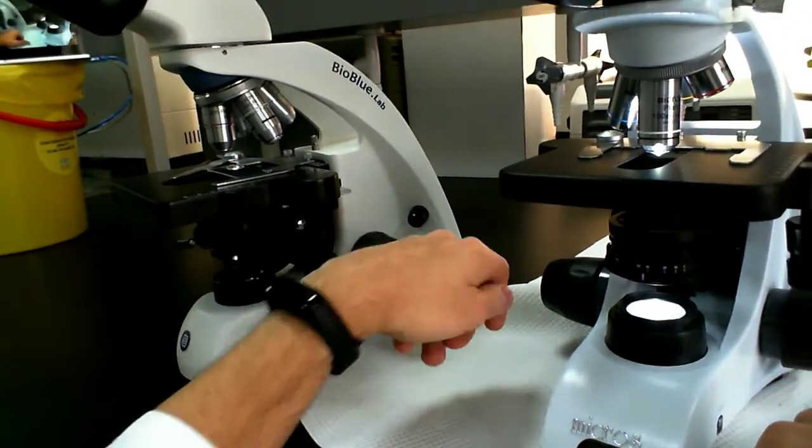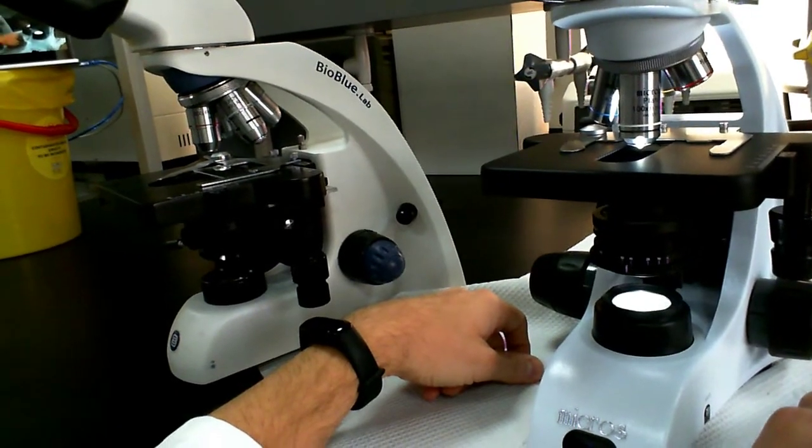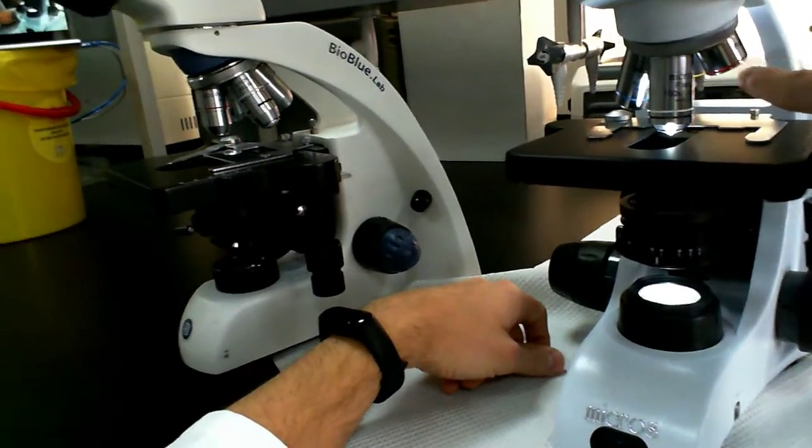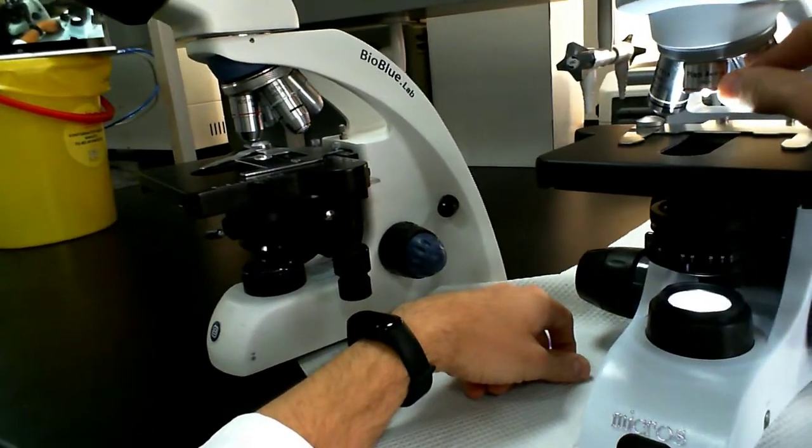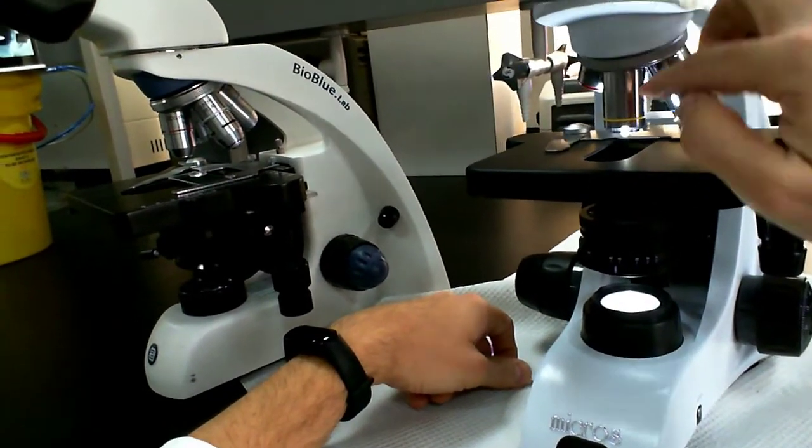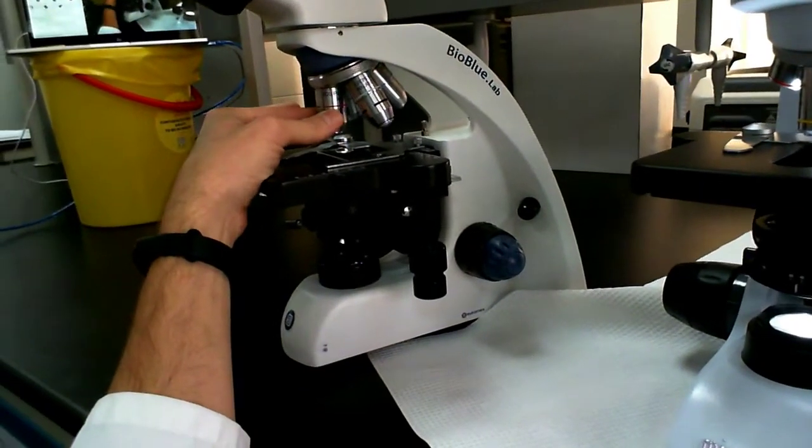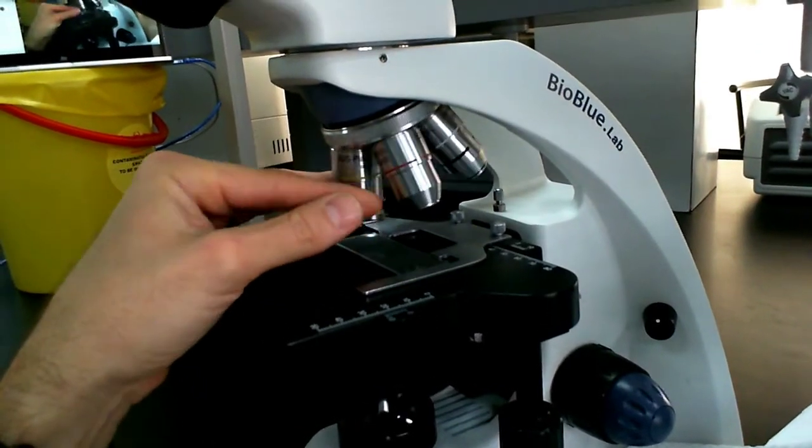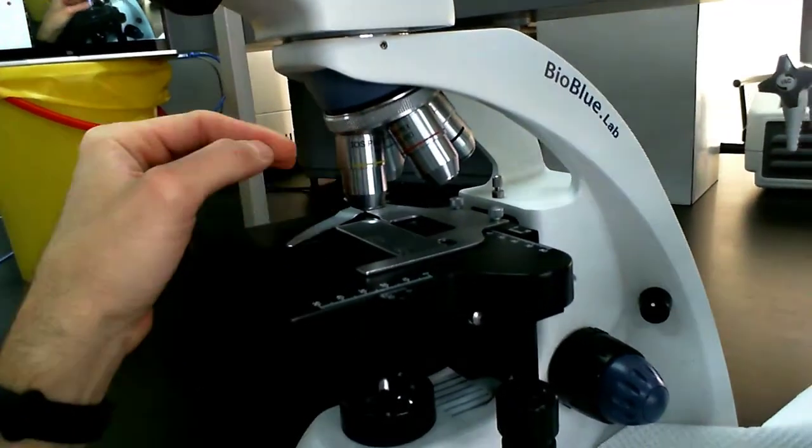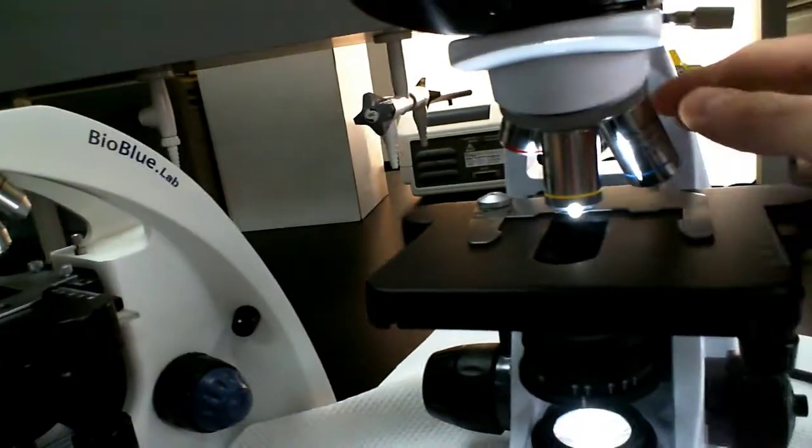The 100x objective is an oil lens. It usually has a black stripe on it. So you can see that there are different colors on these lenses. There's a red stripe on the 4x, a yellow stripe on the 10x. So again, red stripe on the 4x, you can see the colors here.